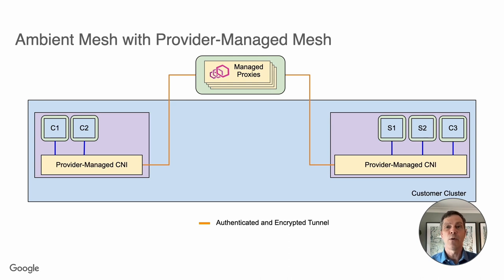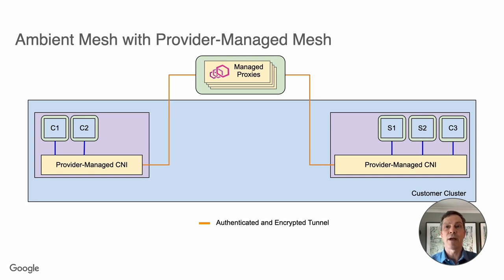These alternative components we've been discussing — an enhanced CNI with zTunnel functionality and a managed Waypoint proxy — mirror existing components in most cloud providers. By extending the capabilities of the CNI and making use of a managed load balancer, we can provide Istio Ambient Mesh without introducing a new layer for the user to manage. It becomes the responsibility of the cloud provider to maintain and scale the service mesh so users can focus on building their applications.